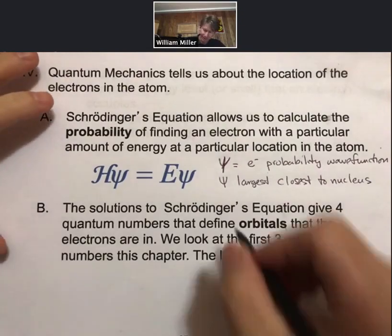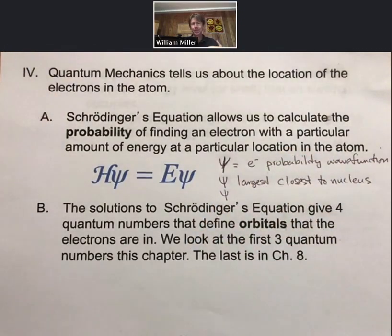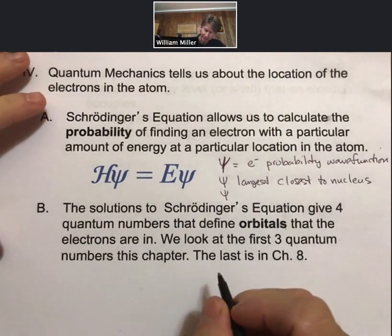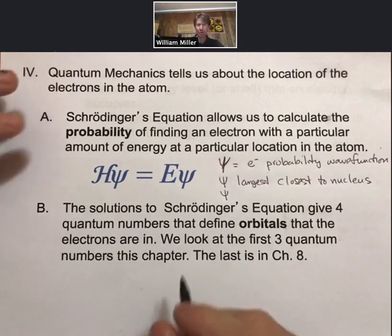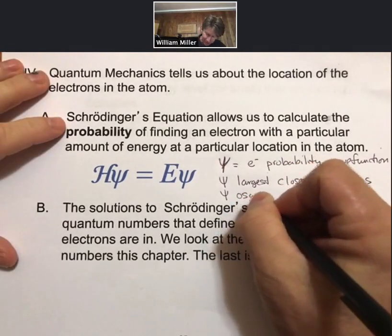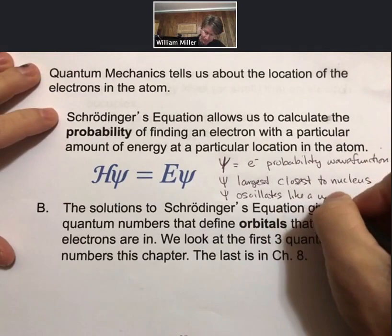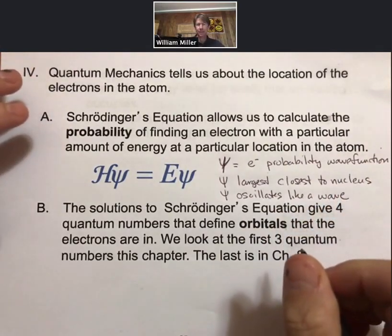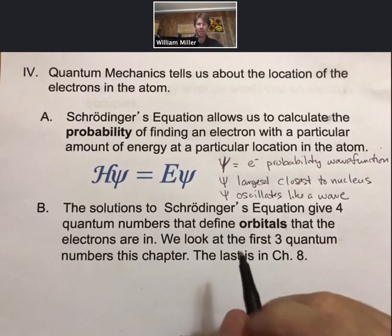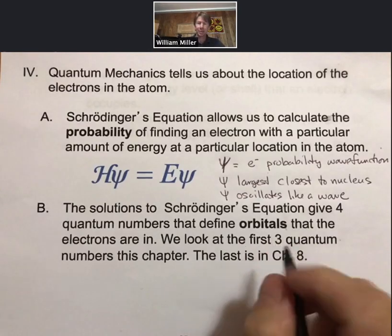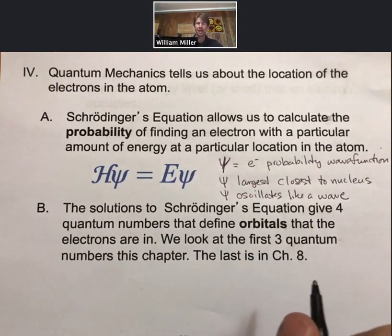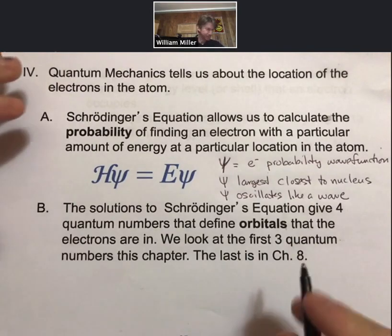And again, that's because the electron is attracted to the nucleus. And then psi oscillates or has the form of an exponentially decaying sine wave as you get farther from the nucleus, so psi oscillates like a wave. And I guess that's all we need to know. You can always come to office hours and ask me questions about more information about psi, but we really don't need to know it for this course.